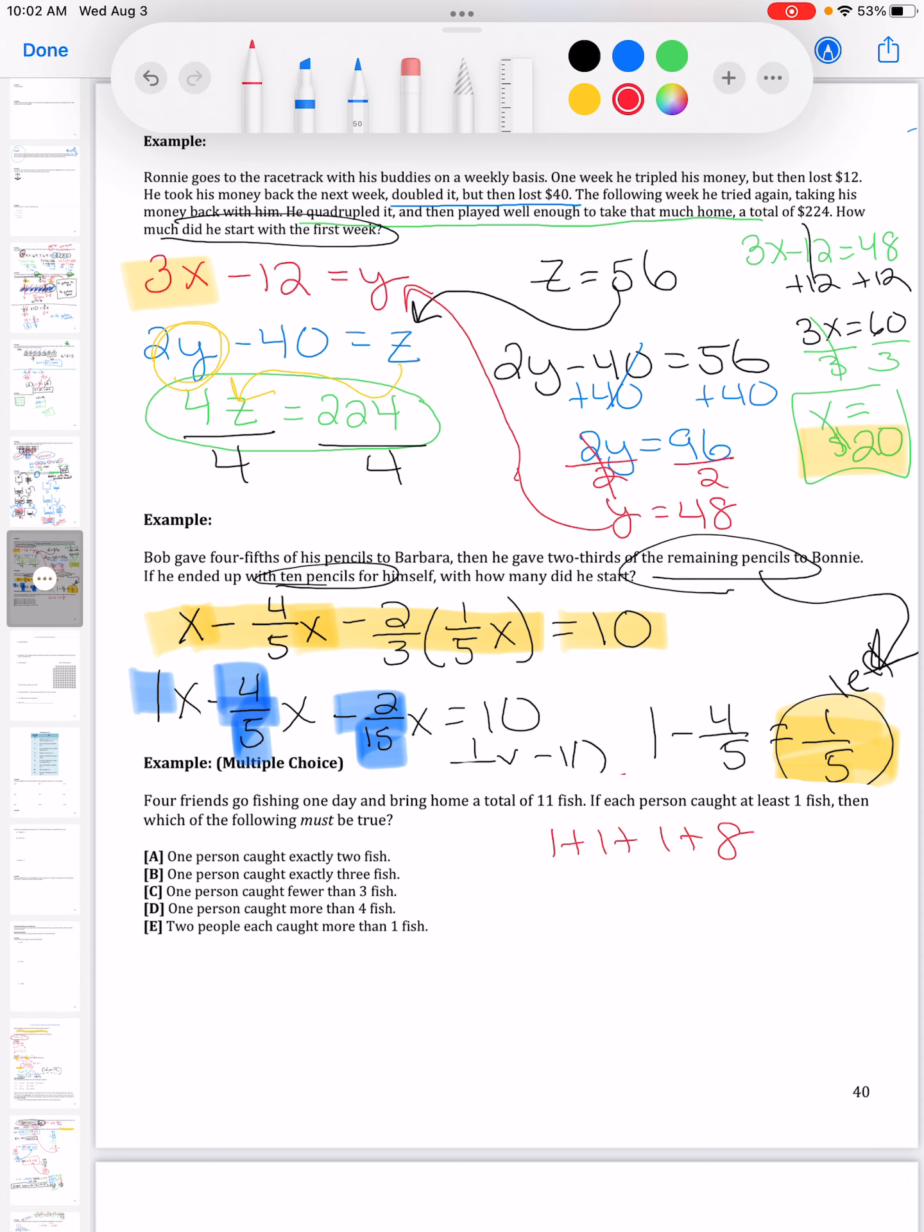Has to be a total of eleven. So I'm adding four numbers together to get a total of eleven. One of these statements has to be true. There's no way it didn't happen. Some of them could happen or could not happen, but there's one that has to be true. There's no way it didn't happen.